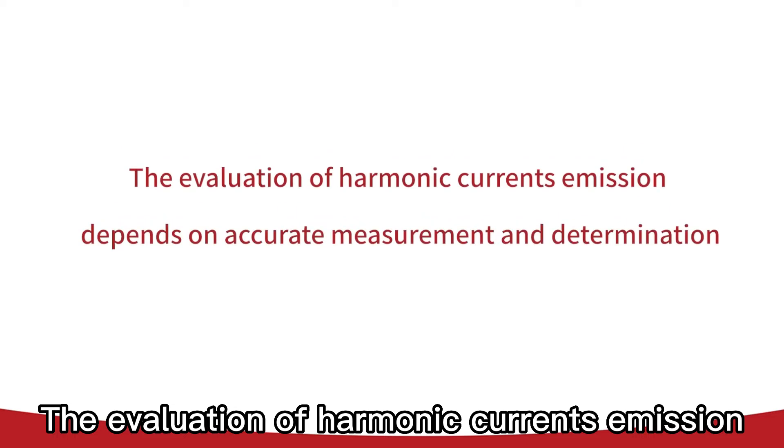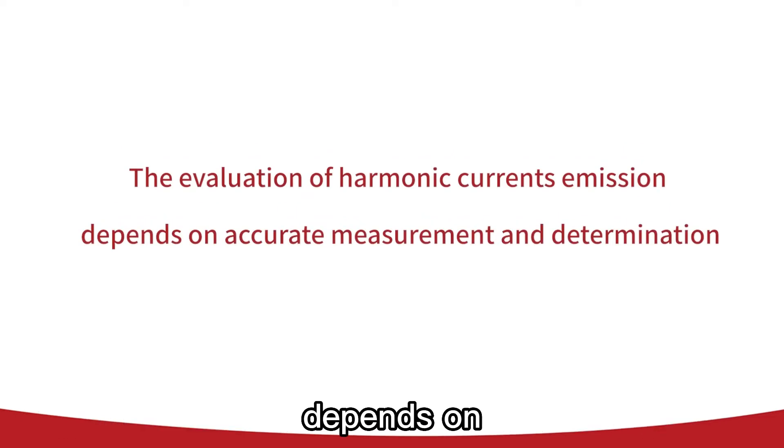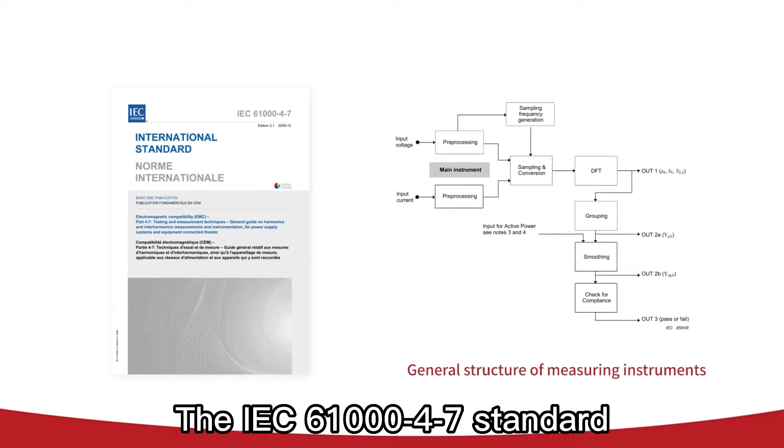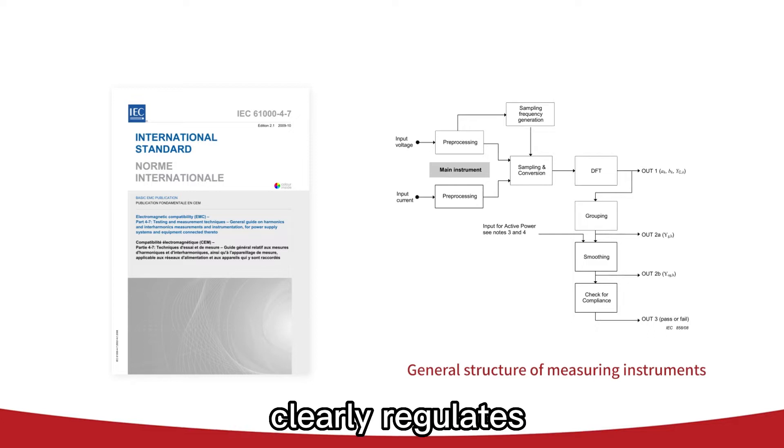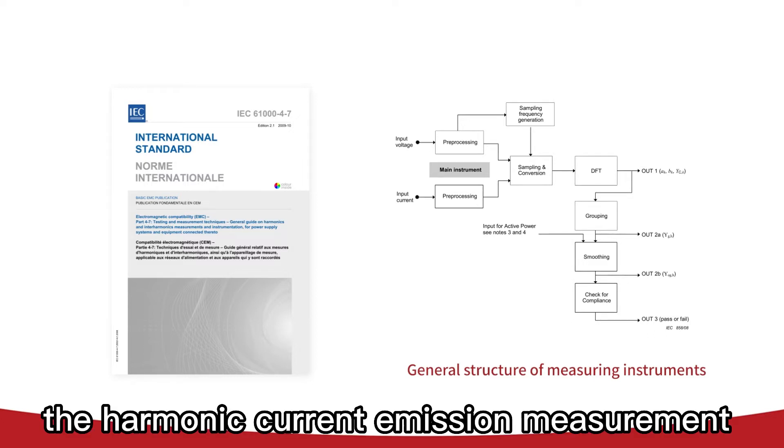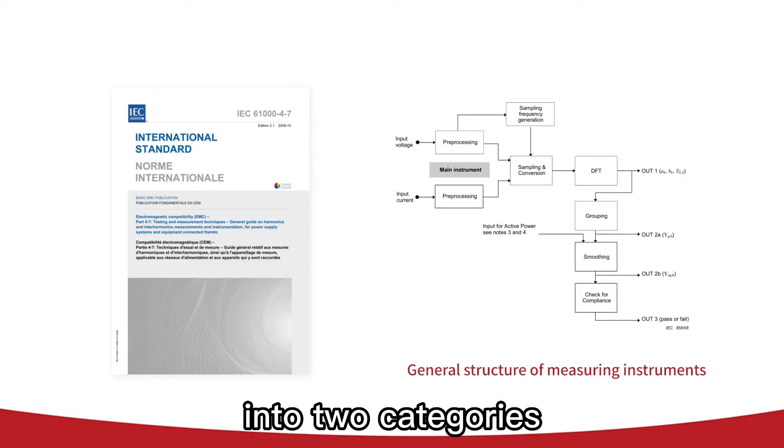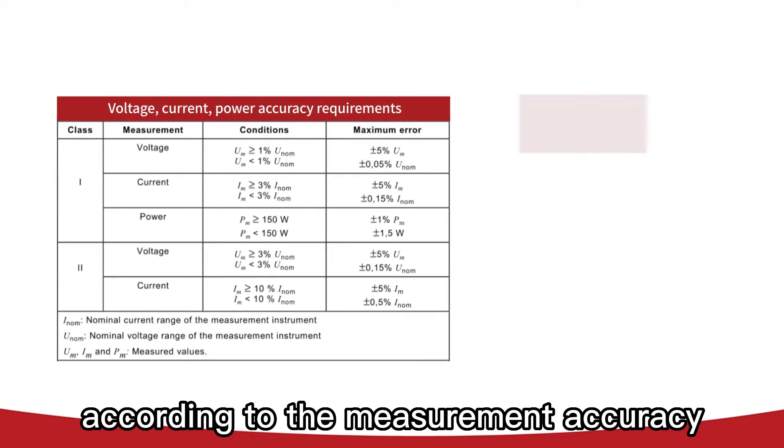The evaluation of harmonic current emission depends on accurate measurements and determination. The IEC 61000-4-7 standard clearly regulates the harmonic current emission measurement methods and divides the instruments into two categories according to the measurement accuracy.